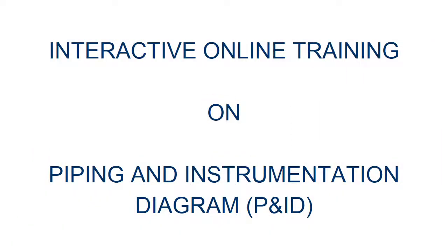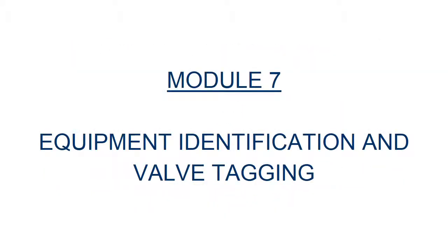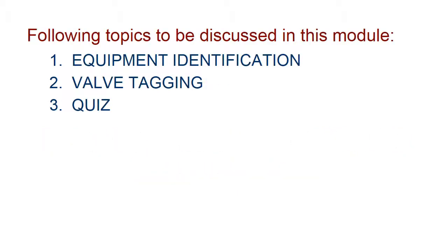Interactive Online Training on Piping and Instrumentation Diagram. Module 7: Equipment Identification and Valve Tagging. The following topics are to be discussed in this module: 1. Equipment Identification, 2. Valve Tagging, 3. Quests.